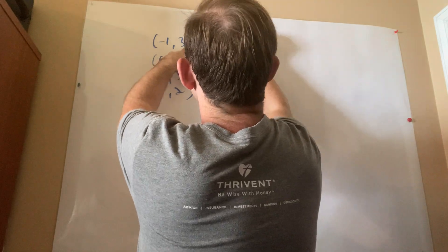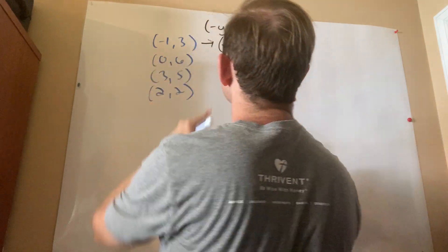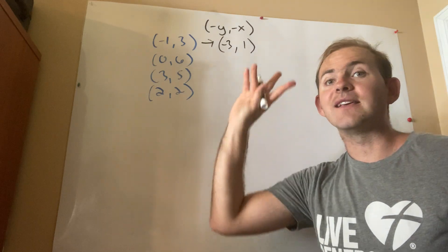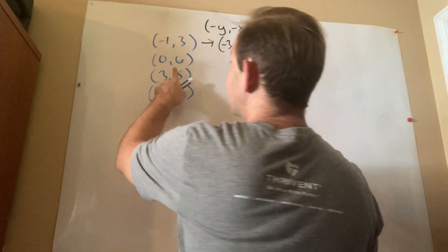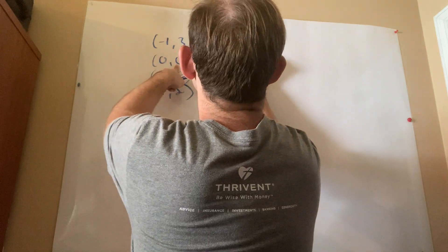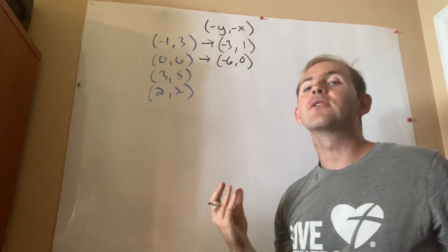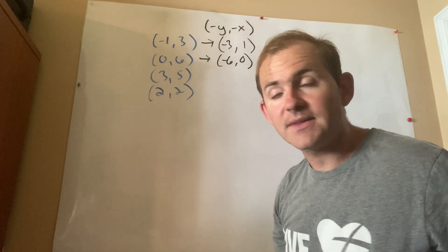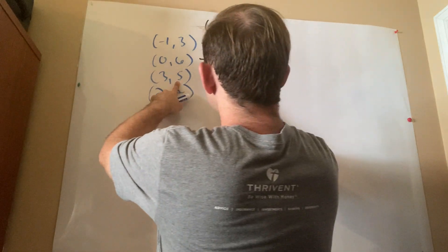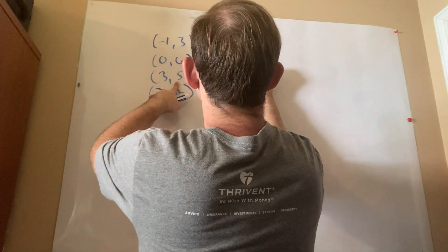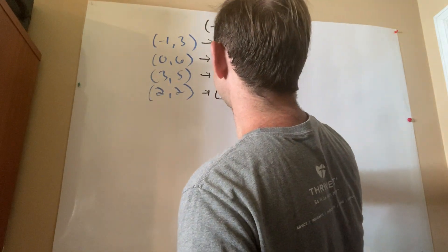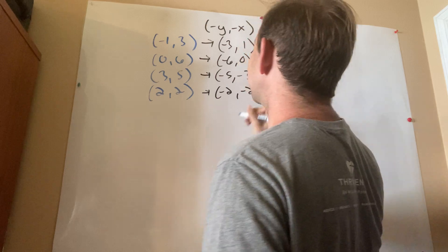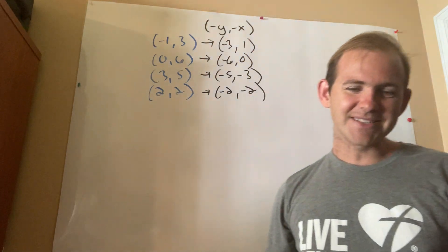So over here, this is going to become negative 3 comma 1. Notice how they switched places, but they also switched signs. Over here, this is going to become negative 6 comma 0. The reason is negative 0 is the same thing as 0. Over here, we're going to have negative 5, negative 3. And over here, this is pretty easy. We're going to have negative 2, negative 2.